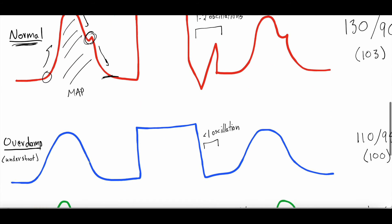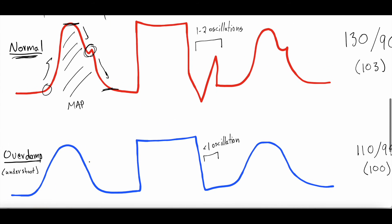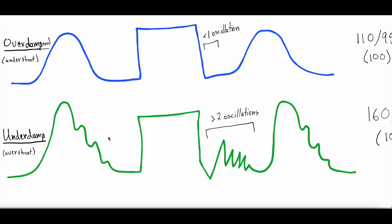Now, this is an over-dampened waveform. See how it doesn't have as sharp an upstroke — it doesn't have a nice dicrotic notch. It's flatter and longer. That's an over-dampened waveform; it's not as sharp and crisp. Then this here is an under-dampened waveform. You can see it comes up more quickly and then actually has multiple dicrotic notch-like features as it comes down. It is under-dampened — not damp enough, too brisk.